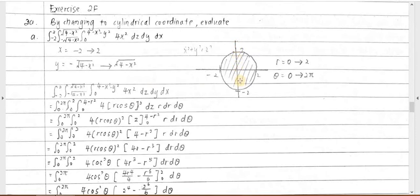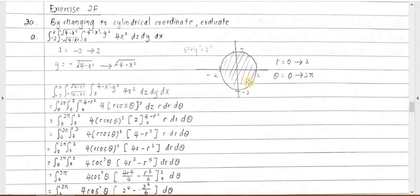According to the interval, y will go from the negative equation of the circle to the positive equation of the circle — covering the whole section. Looking at x, the interval is from negative 2 to 2, meaning the region is the whole circle. So for this whole circle, r goes from 0 to 2, and theta goes from 0 to 2π because it is a complete circle.